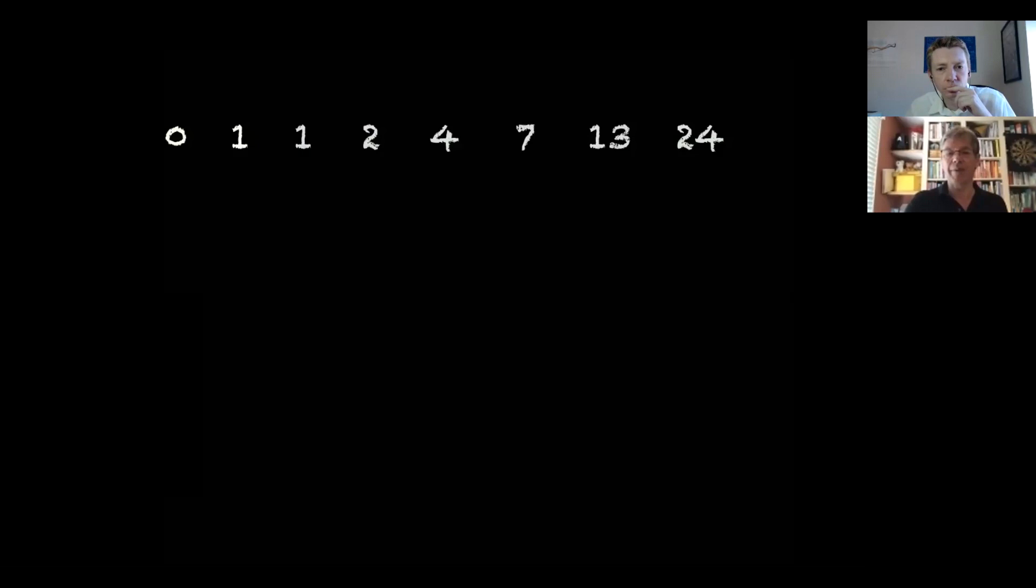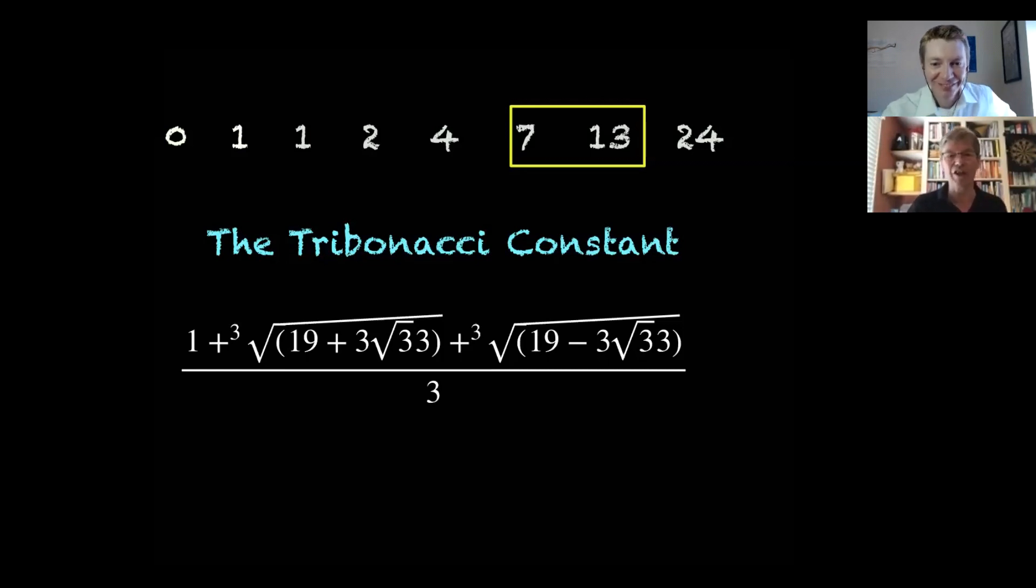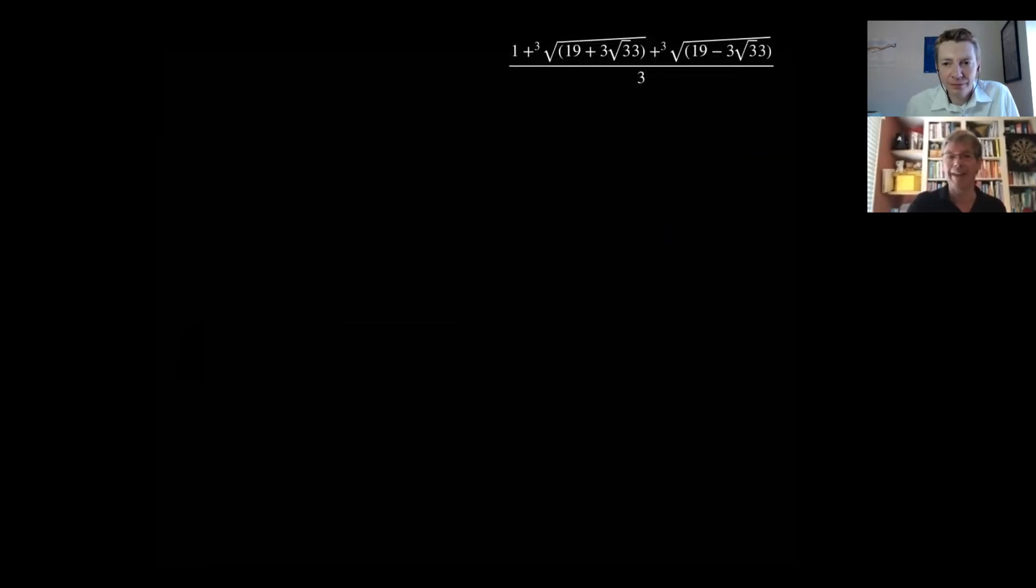That Tribonacci sequence - if you take each term and divide it by the previous one, the further you go along the nearer it gets to a number known as the Tribonacci constant. I'm going to show this to you. Look away anyone who doesn't like scary looking formulas. It's the Tribonacci constant: one plus the cube root of 19 plus three square root of 33, sorry about my notation. A messy looking number which is about 1.8 something.